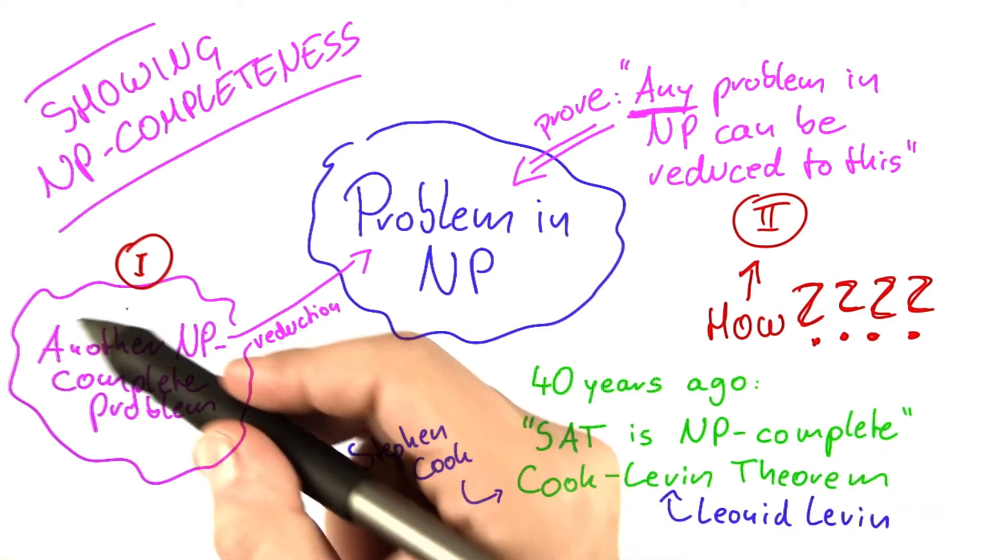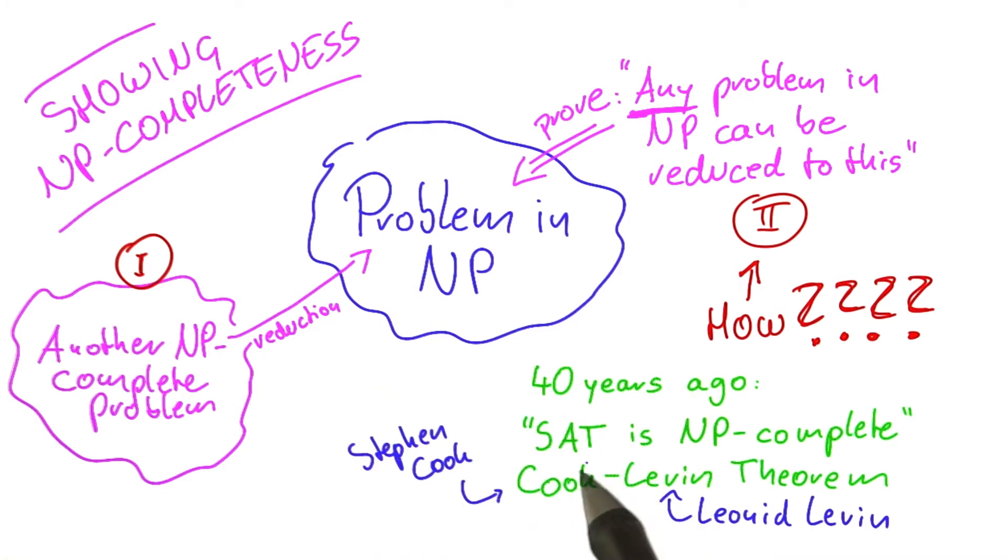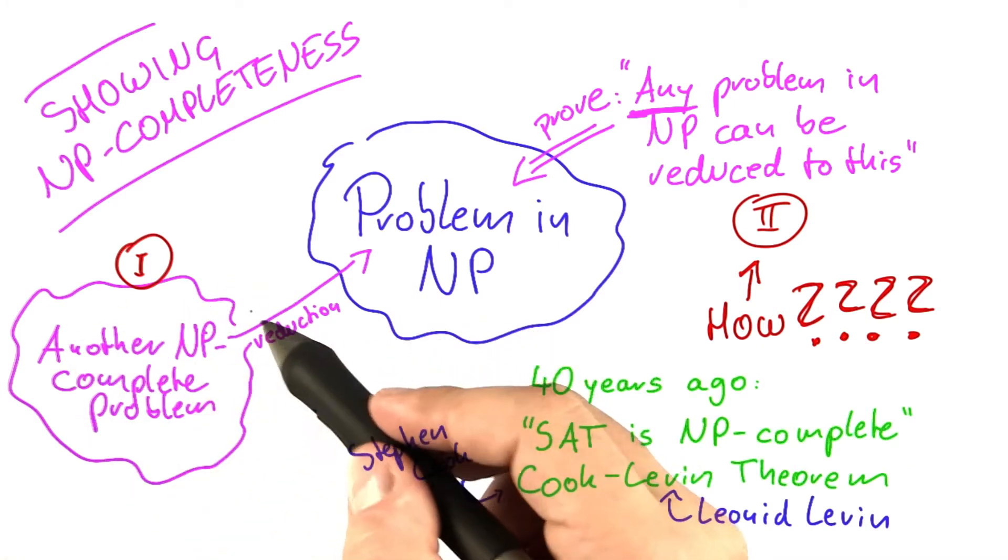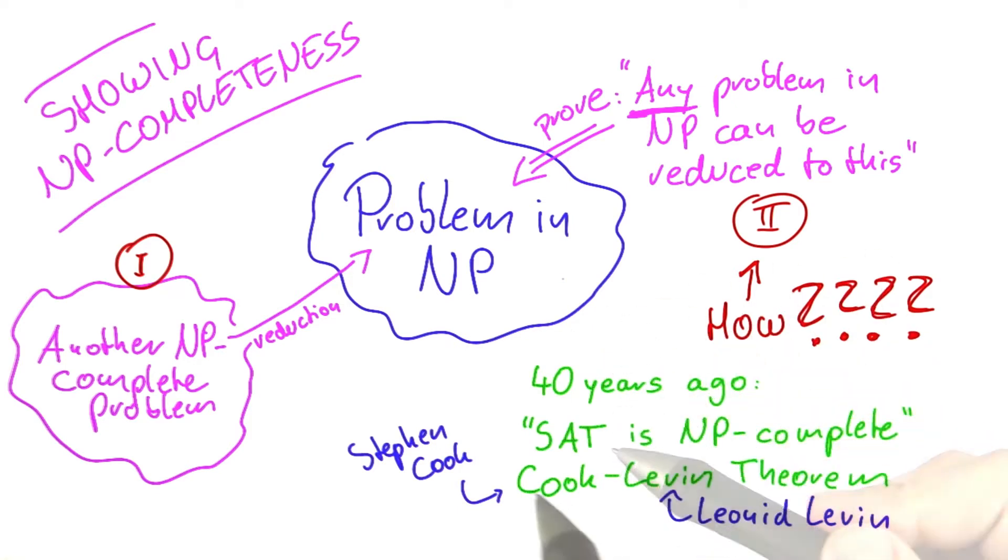And by showing that, they provided exactly this NP-complete seed problem, namely SAT, which could then be used to show that a number of other problems are NP-complete as well. And I'm going to show you how Cook and Levin proved that SAT is NP-complete.